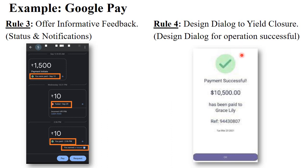The next rule is design dialogue to yield closure. For each and every operation on Google Pay, a particular dialogue or design notation is given. When you perform an operation successfully, it shows a blue or green color tick mark. This notifies the user that the operation was successful. This is called design dialogue.